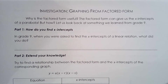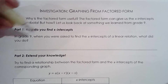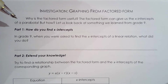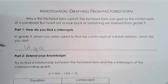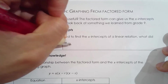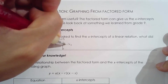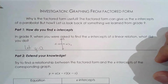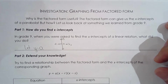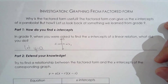Before we graph from factored form, we actually want to look at something we learned in grade 9 — finding x-intercepts. In grade 9, when you were asked to find the x-intercepts of a linear relation, you simply let y equal zero. That makes perfect sense because if you're on the x-axis, the y-coordinate must be zero. You're not going to let y equal 1 to find the x-intercept — you let y equal zero because you're on the x-axis.